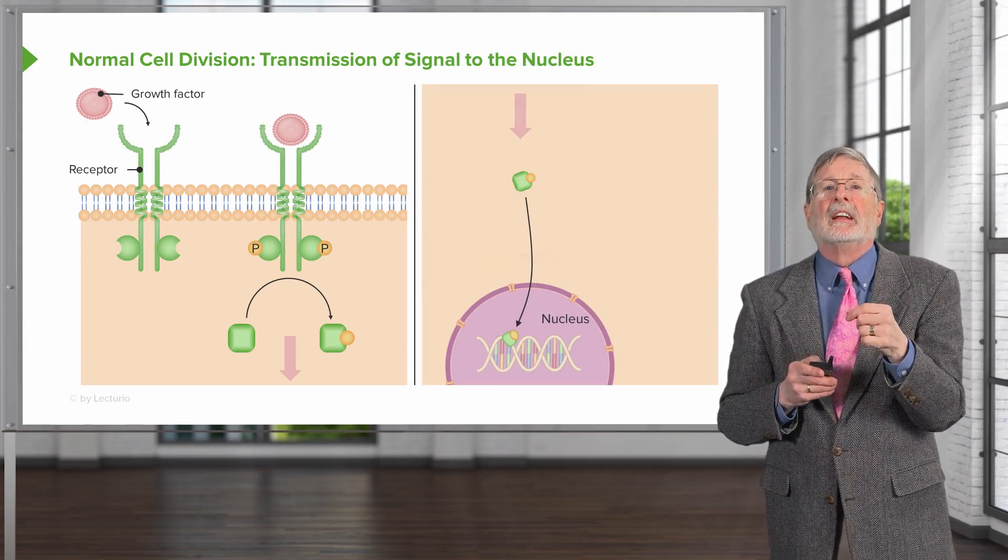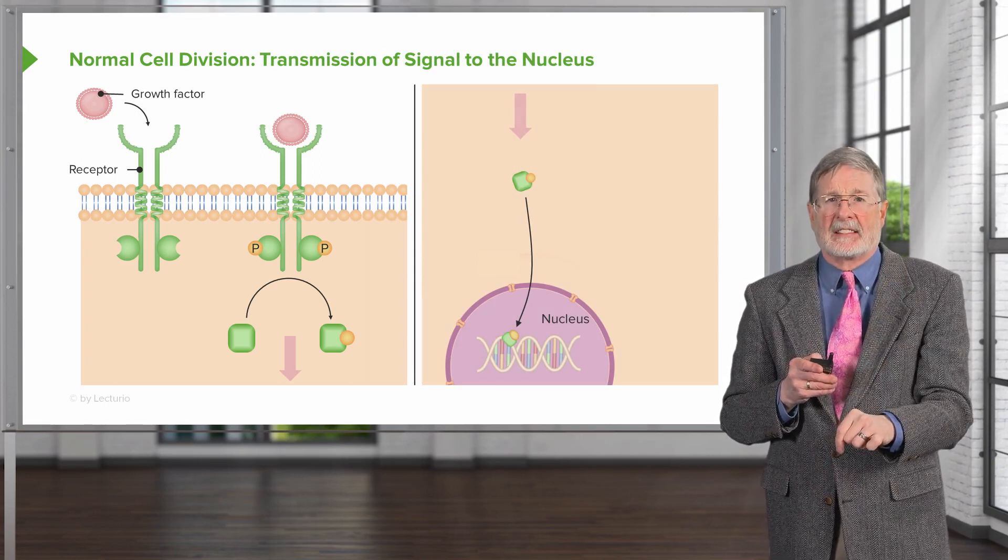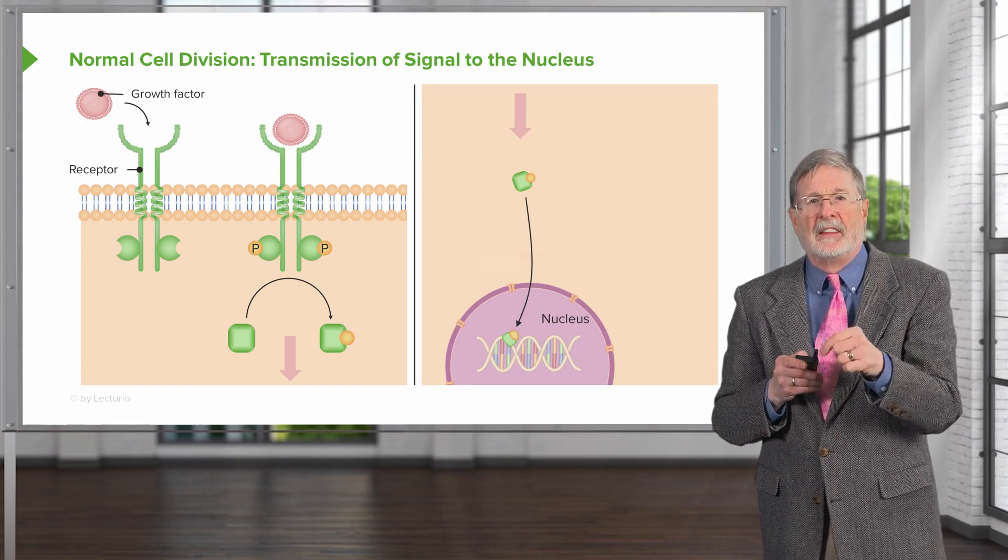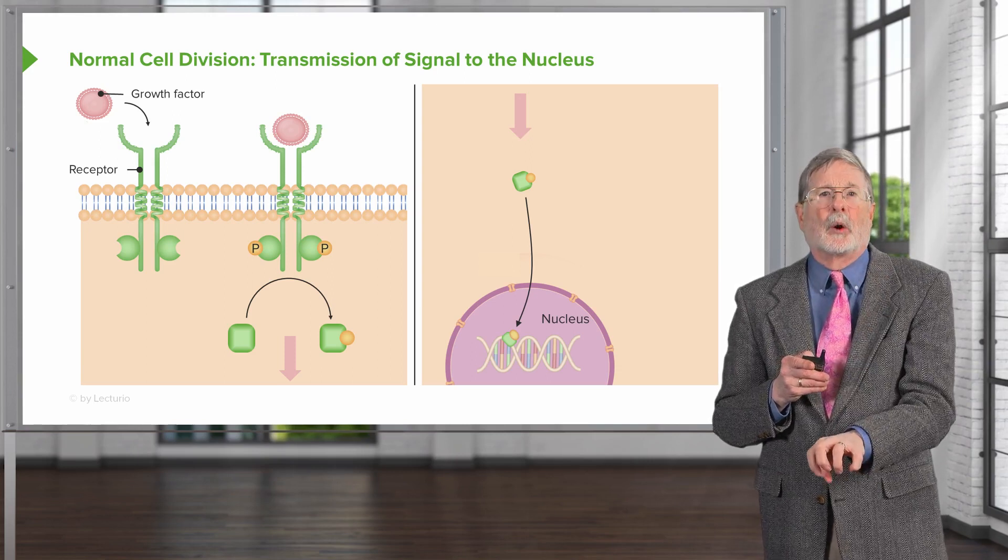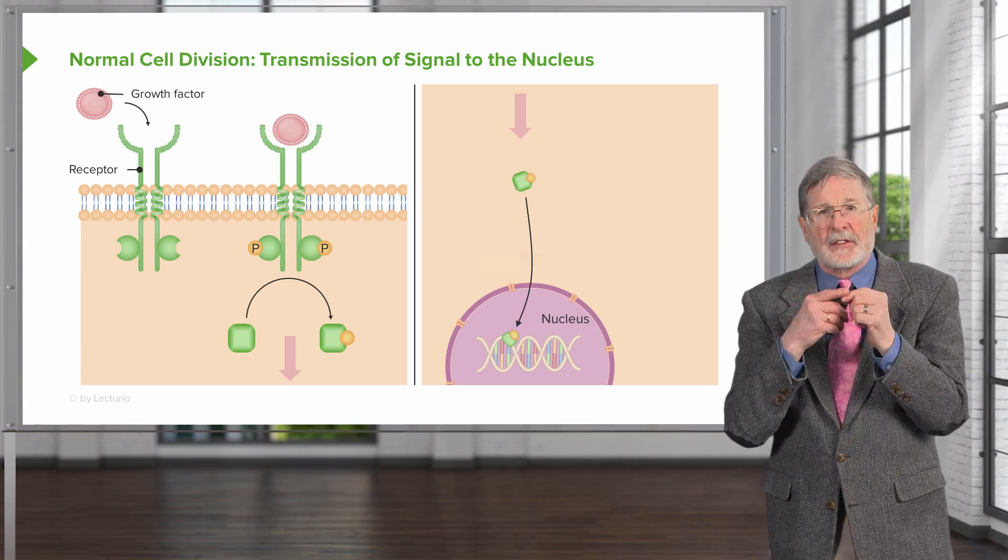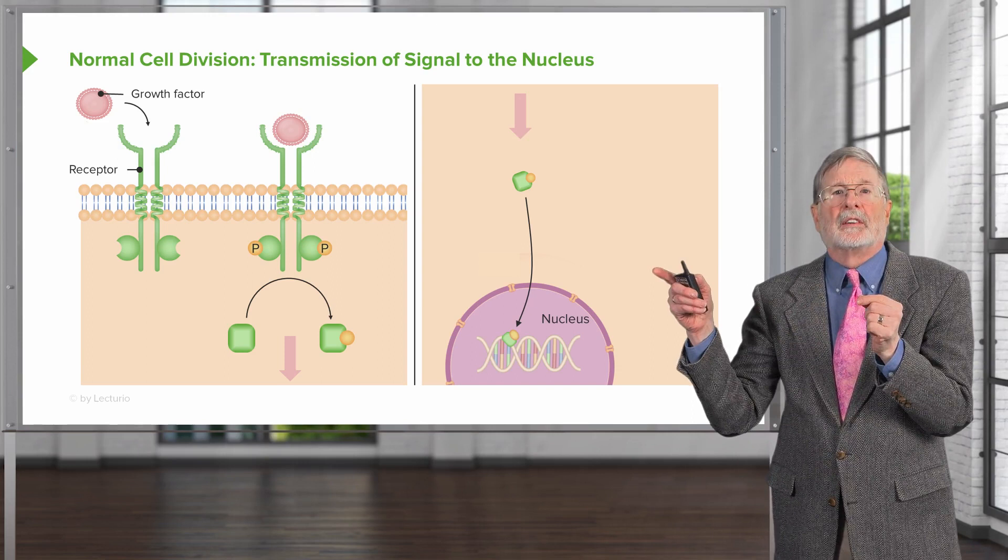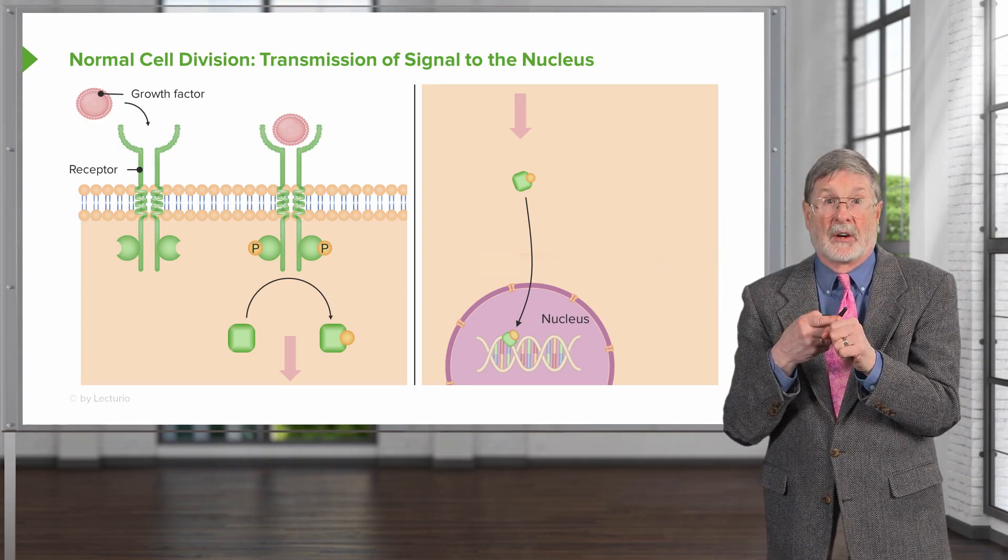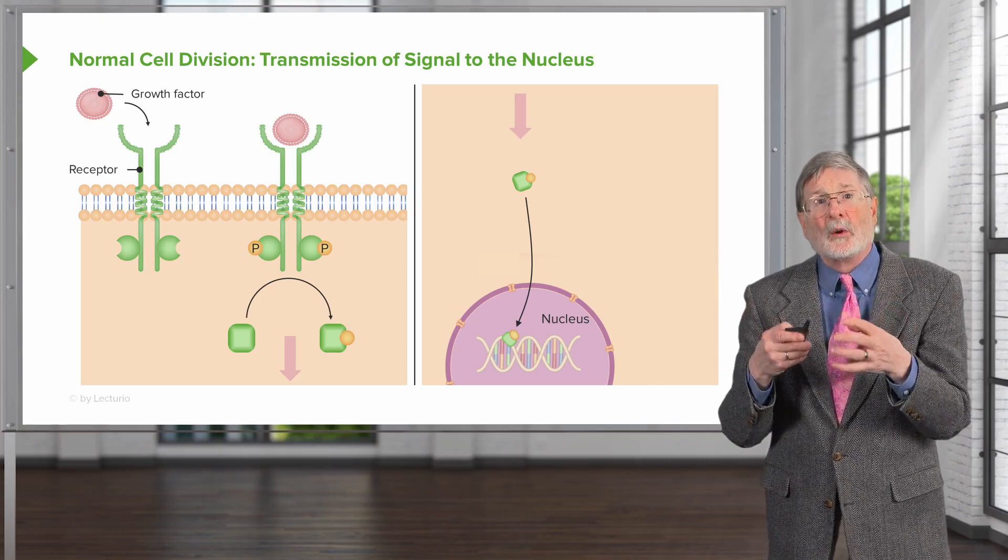We'll eventually get something that is able to access the nucleus, a transcription factor that's become phosphorylated, that can now sit down on its appropriate promoter site and cause the transcription of new nuclear material, of new message to drive whatever process we want to drive. That's the normal pathway.